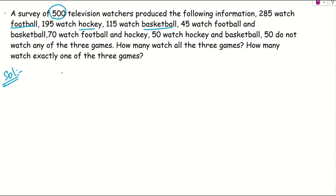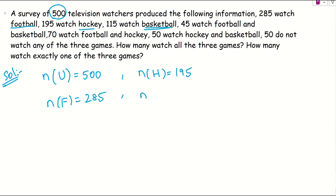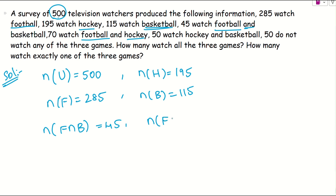So 500 is the total — the universal set. I'll take F for football, so N(F) = 285. H for hockey, N(H) = 195. B for basketball, N(B) = 115. Now, 45 watch football and basketball, so F intersection B = 45. 70 watch football and hockey, so F intersection H = 70. And hockey intersection basketball, N(H∩B) = 50.